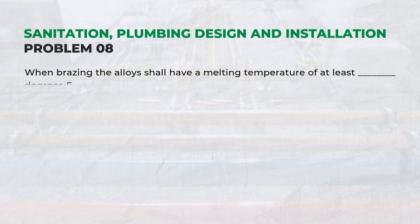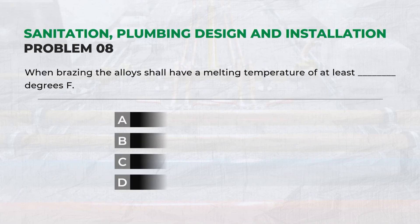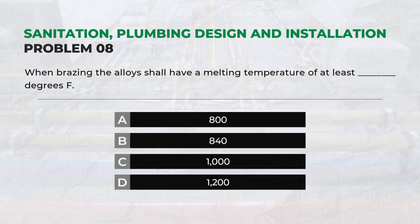When brazing, the alloys shall have a melting temperature of at least how many degrees Fahrenheit — Answer C: 1000 degrees Fahrenheit.